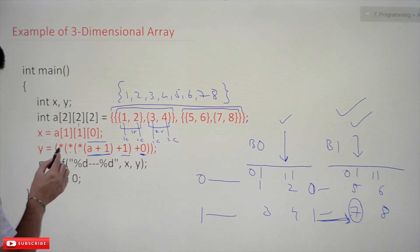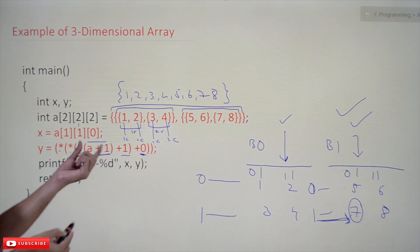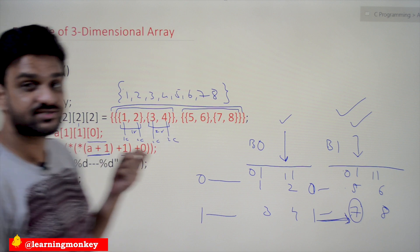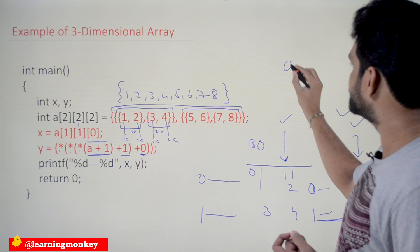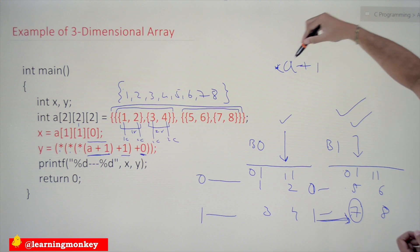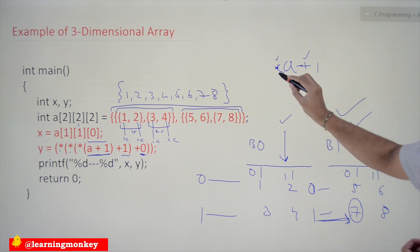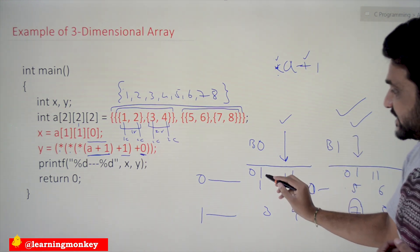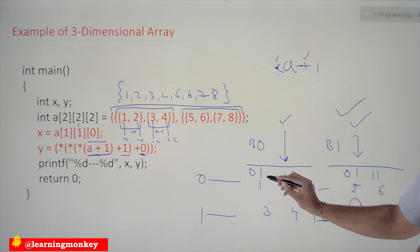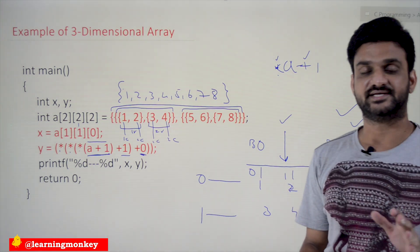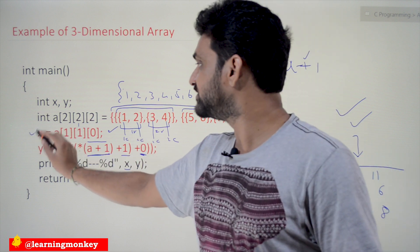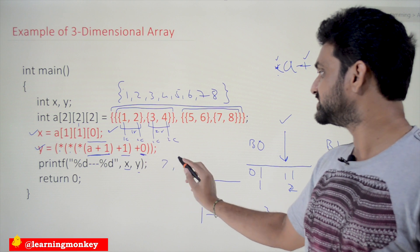The parentheses are given because without them, operator precedence would apply — star has the highest precedence over plus. So `*a` would go to block 0, and `+1` would go to the next row. That is why parentheses are necessary. We discussed this in two-dimensional arrays as well. So x and y will get printed, and the output is going to be 7, 7.